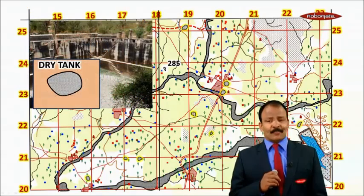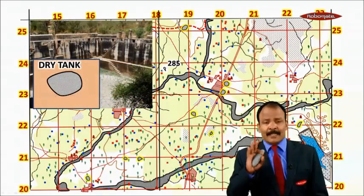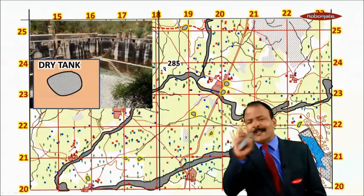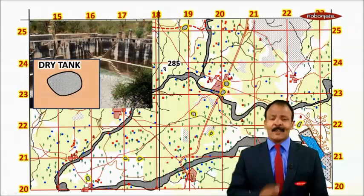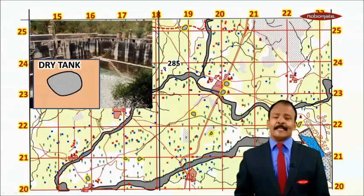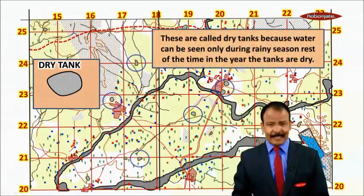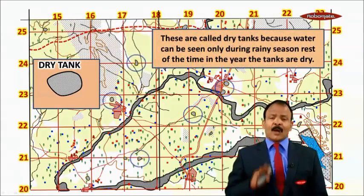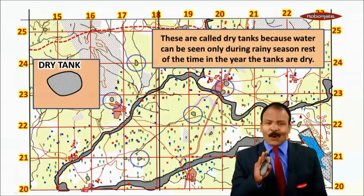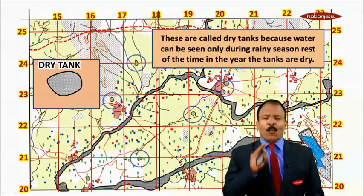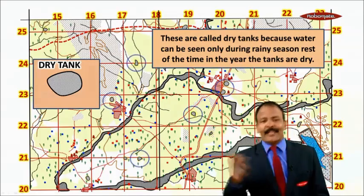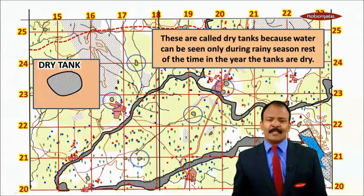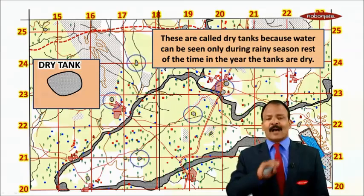Now we will see some more symbols, like dry tank. A topo map will have plenty of dry tanks. These are called dry tanks because water can be seen only during rainy season; for the rest of the year the tanks are dry.